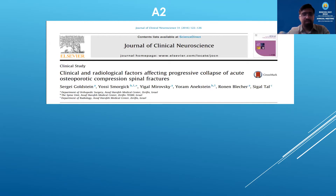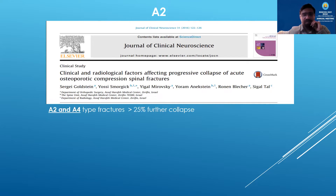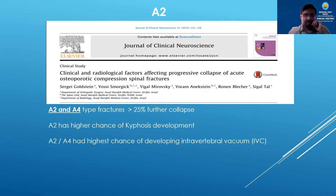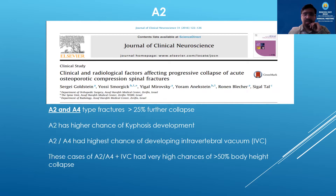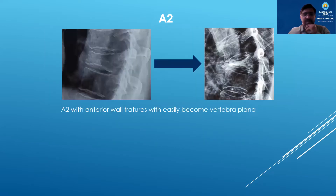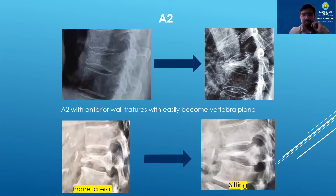Looking at a paper by Goldstein et al., they looked at all conservatively managed osteoporotic fractures and found that A2 and A4 types carry the highest risk of collapse. A2 has the highest risk of kyphosis development and also the highest risk of developing a cleft, which is osteo-vertebral necrosis. Cases with A2 or A4 type along with the cleft have the highest chance of vertebra plana or significant collapse. This is an A2 fracture with an anterior wall fracture that can easily become a vertebra plana.